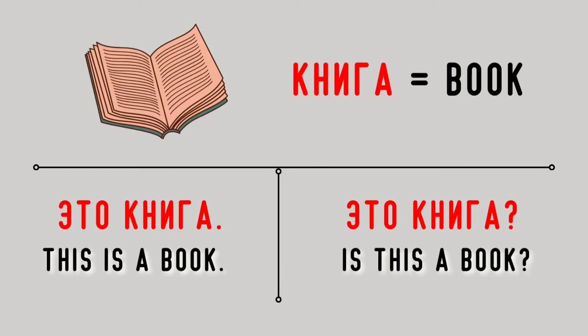Книга — book. Эта книга. This is a book. Эта книга? Is this a book? Эта книга?